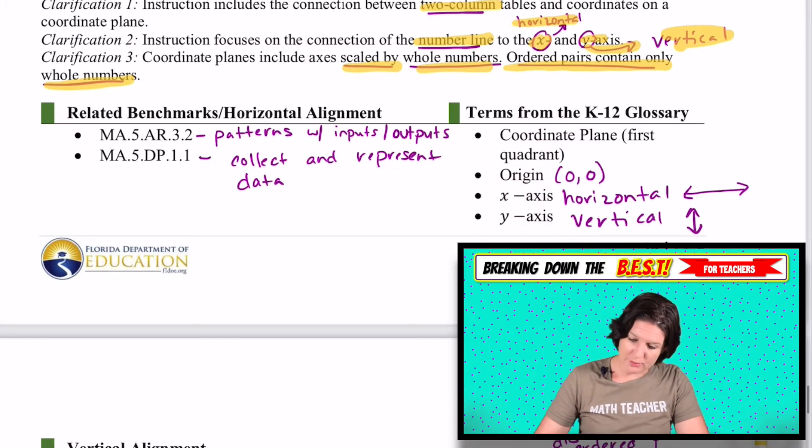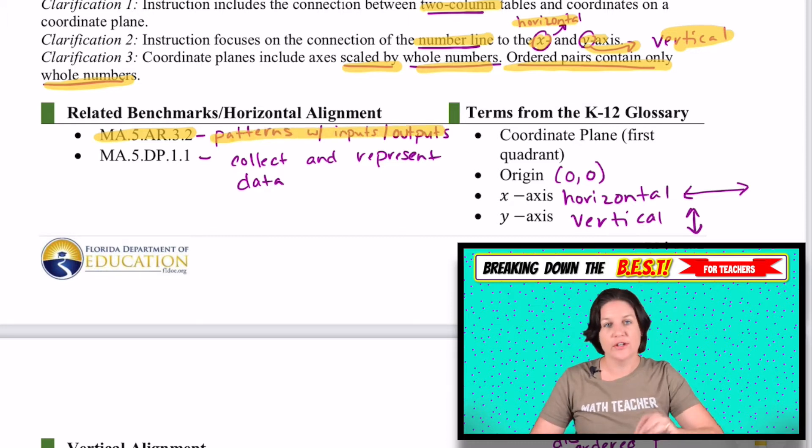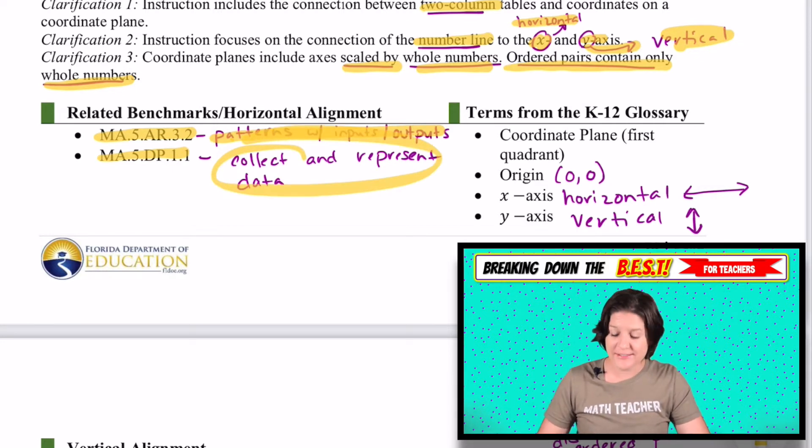So some of the related benchmarks or the horizontal alignment, we've got MA.5.AR.3.2, which includes patterns with inputs and outputs. And in this standard, we are connecting that graphic piece to it. We also have MA.5.DP.1.1, which is where we are collecting and representing data.